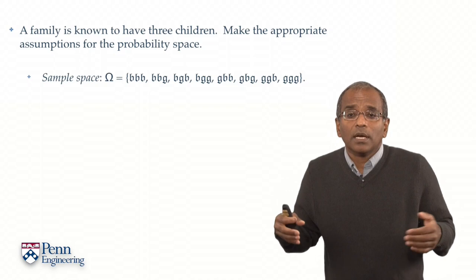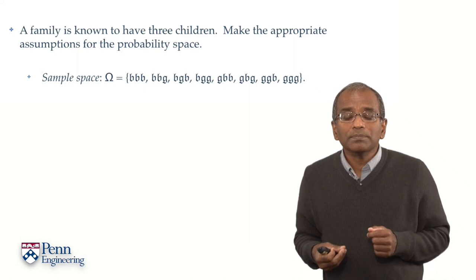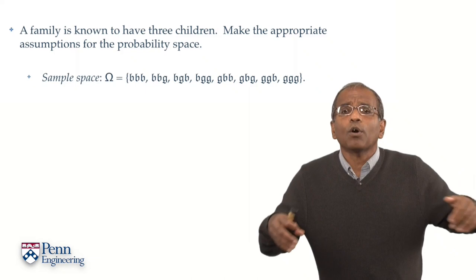the sample space consists of the triple bbb, three boys, or bbg, the youngest is a girl, or bgb, the middle child is a girl, the others are boys, and so on, with ggg meaning all three children are girls. And there are exactly eight possibilities.